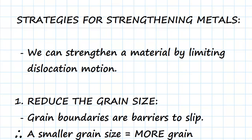So what are the strategies for strengthening metals? Well, we can strengthen a material by limiting the dislocation motion. As we said in the video before, if a dislocation isn't moving, then a deformation isn't going to occur. So we want to look at the strategies that can limit the dislocation motion.